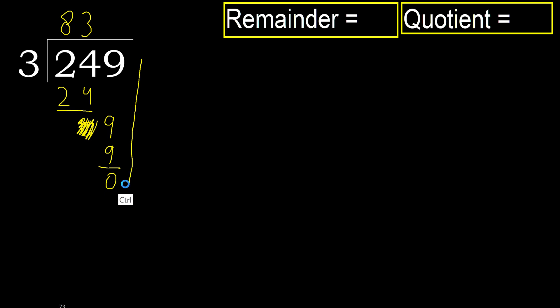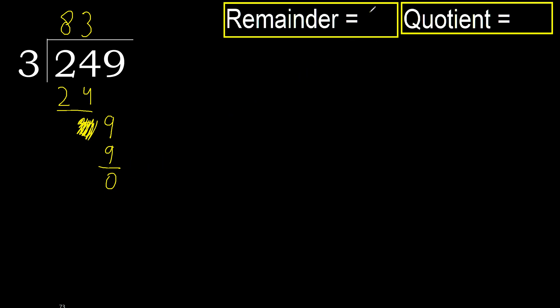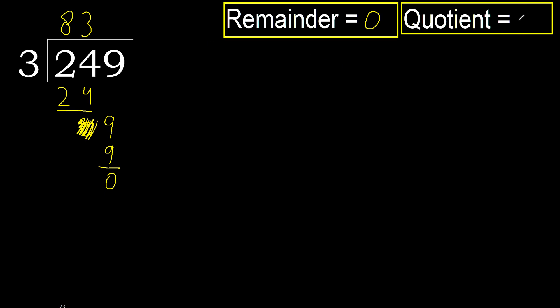There is no remaining number, therefore finish it. 249 divided by 3 is done.